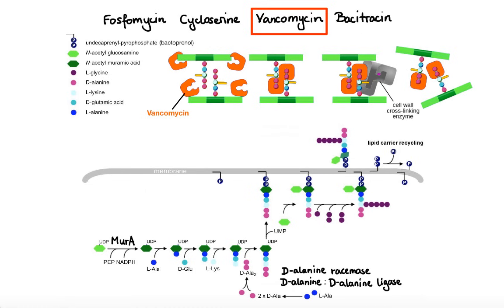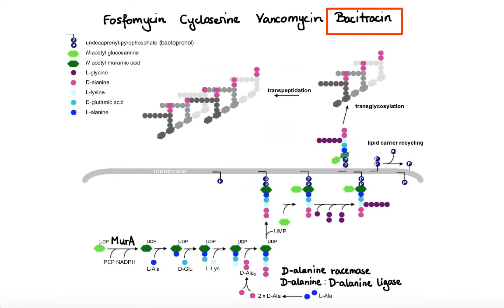Bacitracin comes into play at the very end of the synthetic process. Specifically, bacitracin works by binding to bactoprenol after it inserts the peptidoglycan into the growing cell wall. This prevents dephosphorylation of the transport protein, making it unable to regenerate and perform its job in construction of the cell wall.